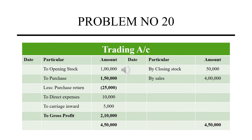Then direct expenses of 10,000, and carriage inward of 5,000 — since we have a factory, carriage inward goes on the debit side. On the credit side, we have closing stock and sales of 4,50,000. The balancing figure, which is the gross profit, comes to 2,10,000.